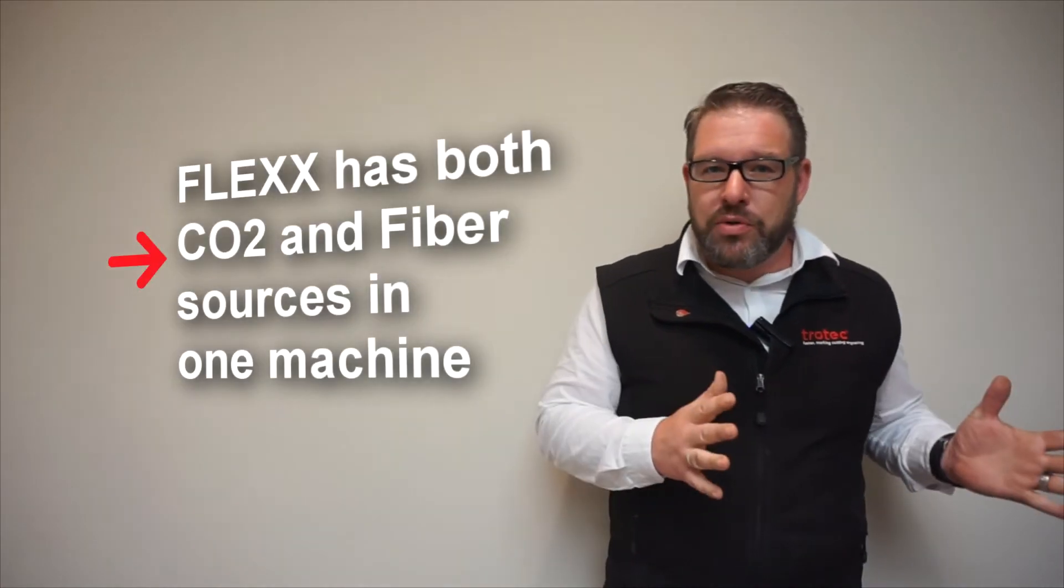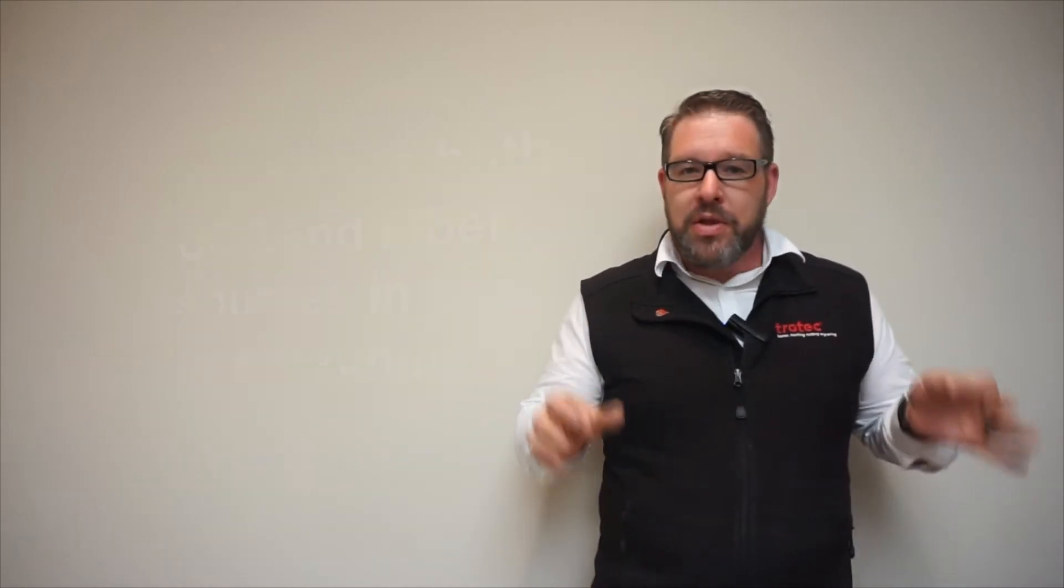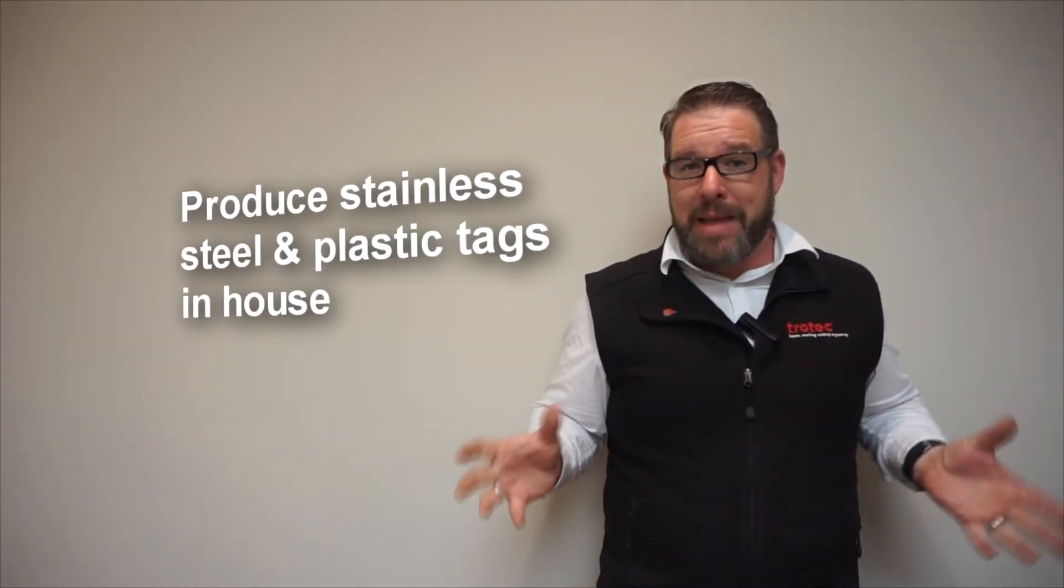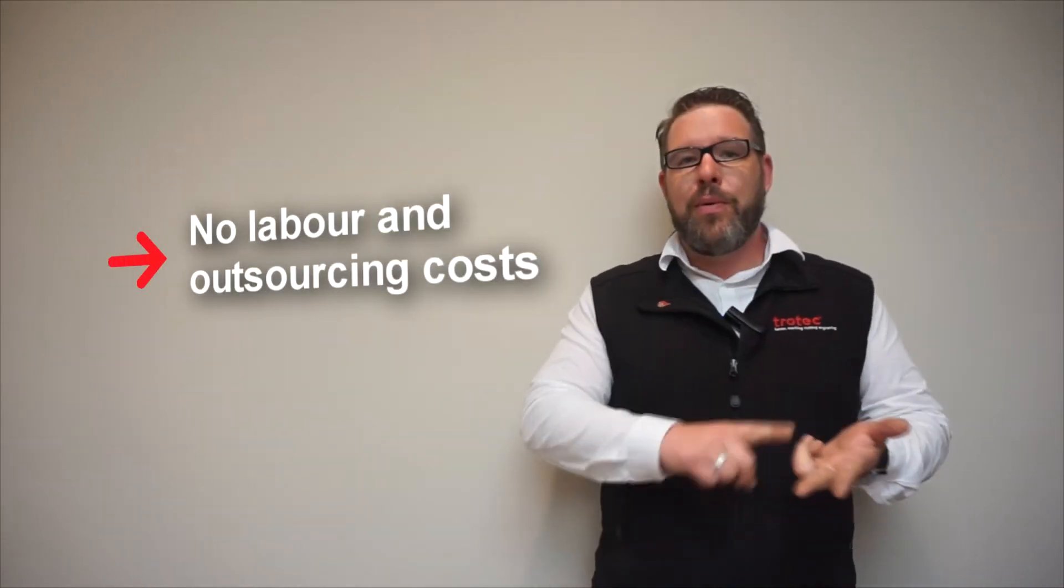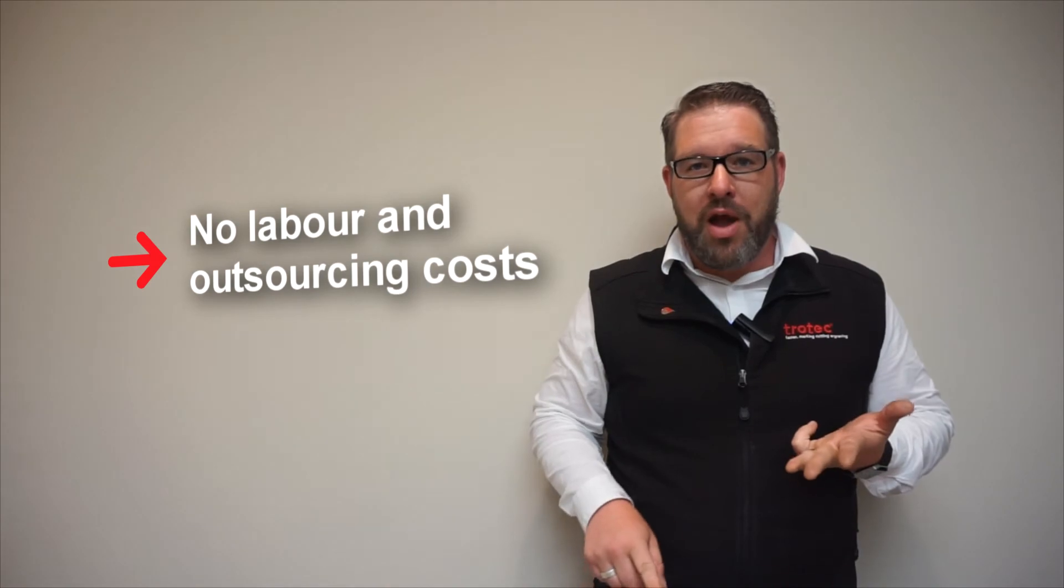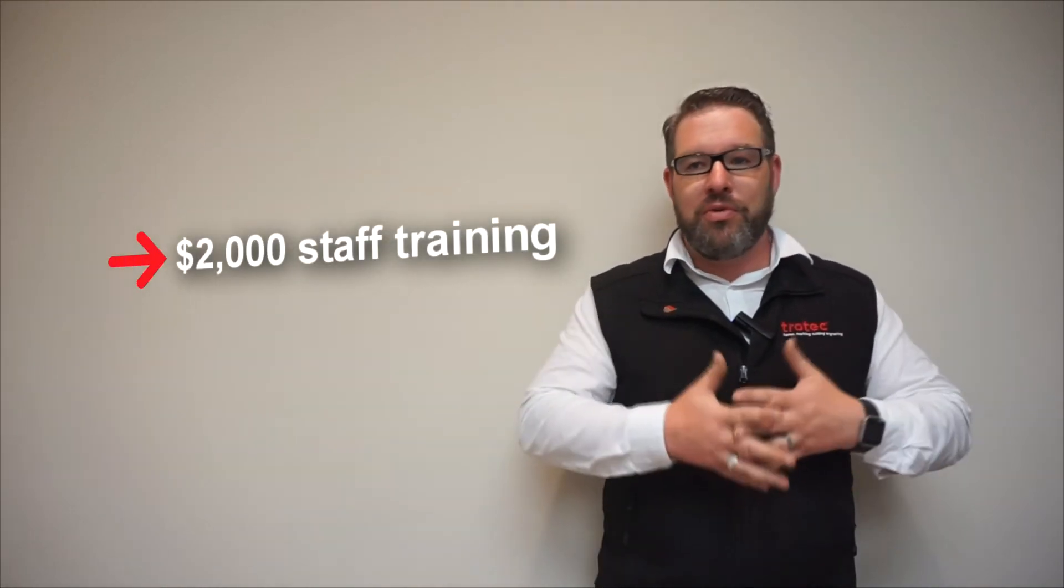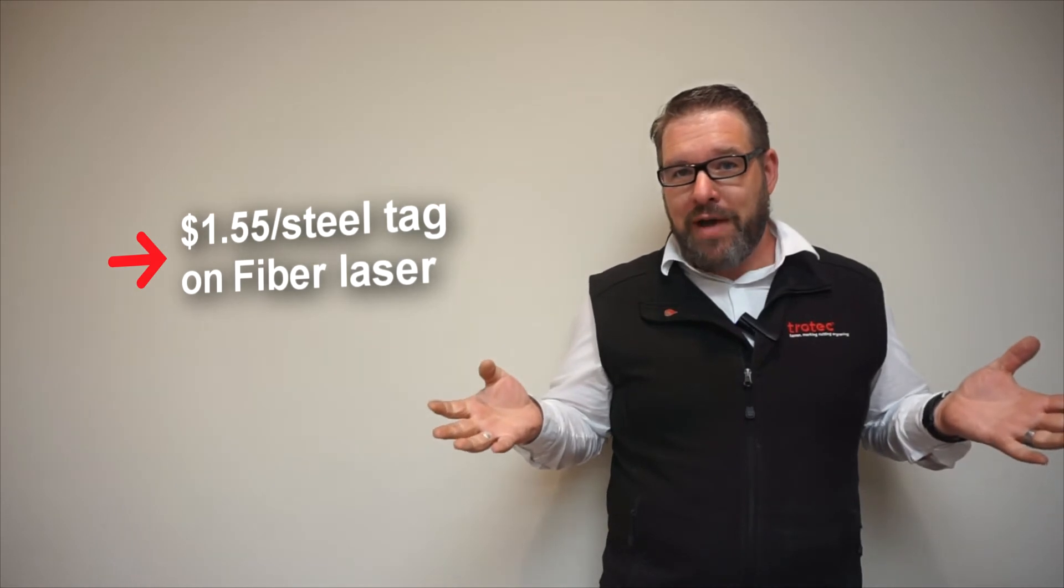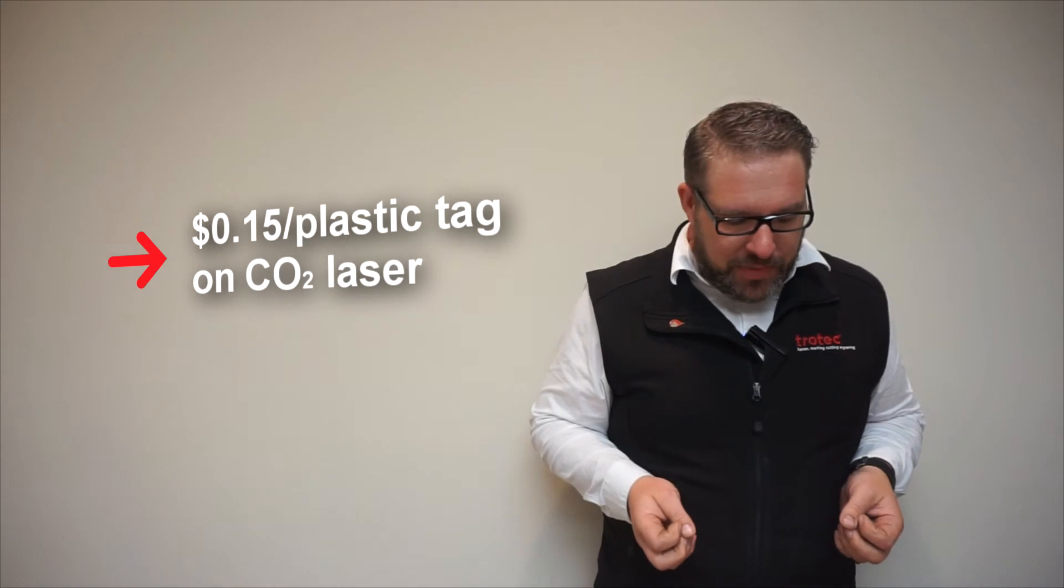The flex laser now—this is a CO2 and a fiber laser all in the same cabinet. This allowed them to produce their metal tags, their stainless steel tags, in-house and it allowed them to produce their plastic tags in-house too. So now we've taken out the outsourcing costs, we've taken out all the labor costs, and we've taken out the inflated price of outsourcing. We still have the $2,000 to train the people—you have to add that into your costs for sure. Next we have our $1.55 for the stainless steel tag, we have our 15 cents for the plastic tag.